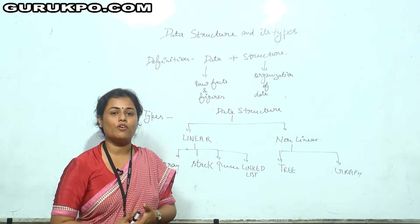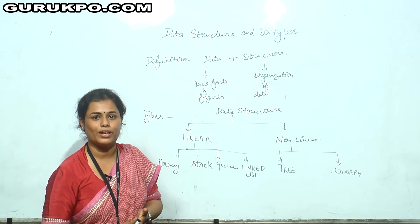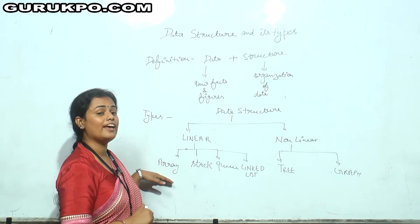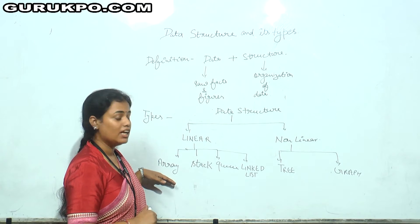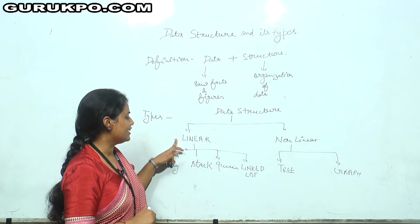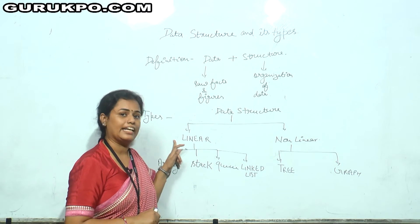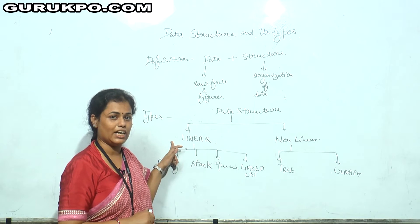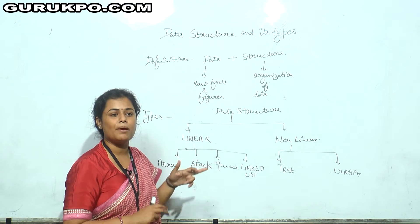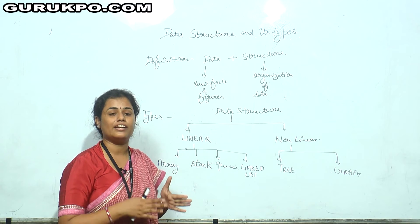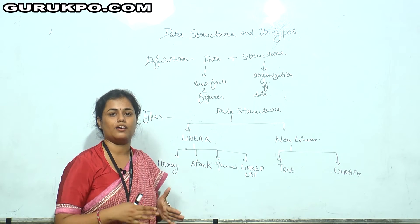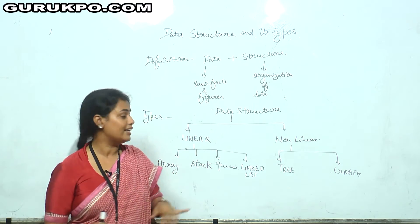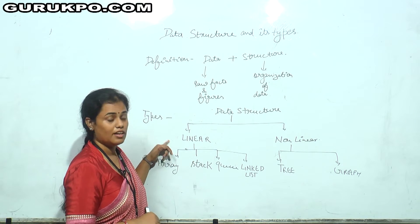As you already know about C programming, in C programming we have already used arrays. Array is a linear data structure — it is the data structure in which we store data in a linear fashion. In the memory location, data is stored in a linear pattern. That is called linear data structure.